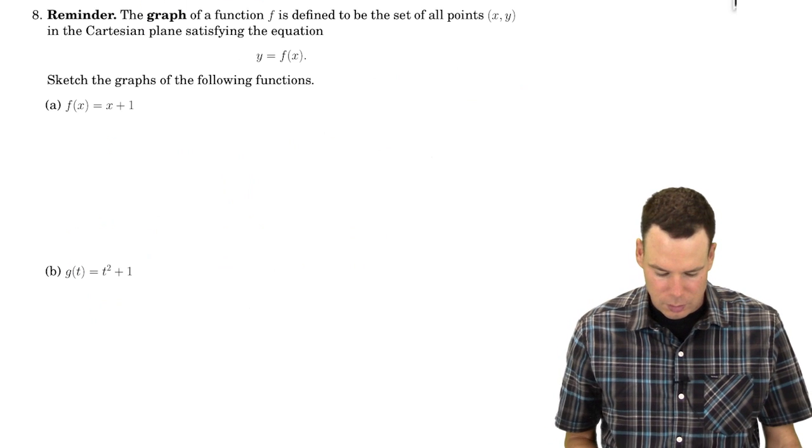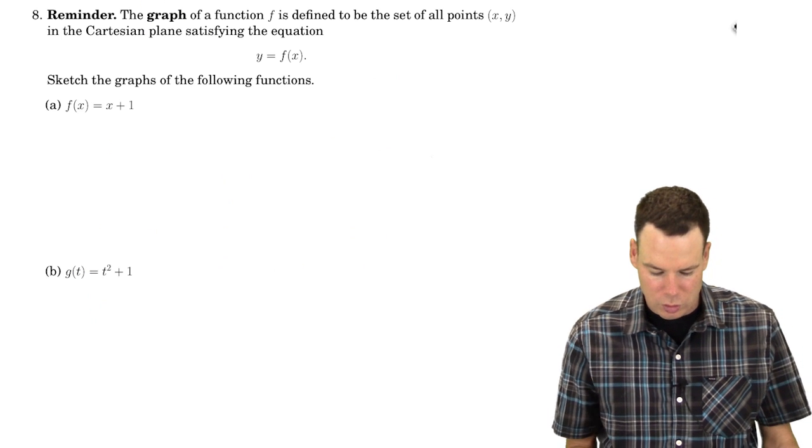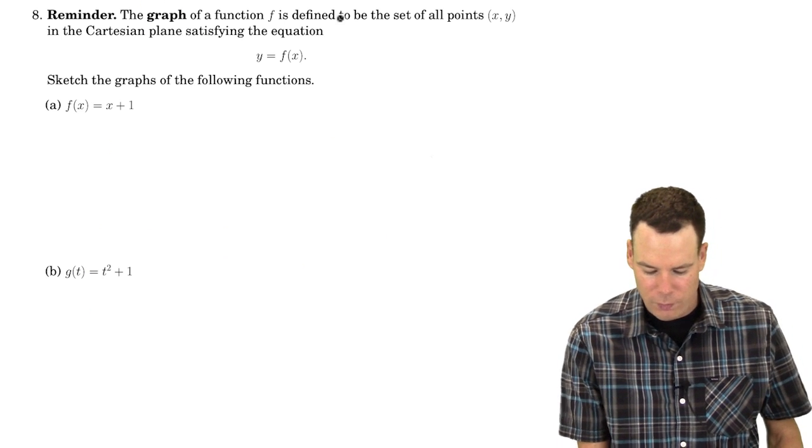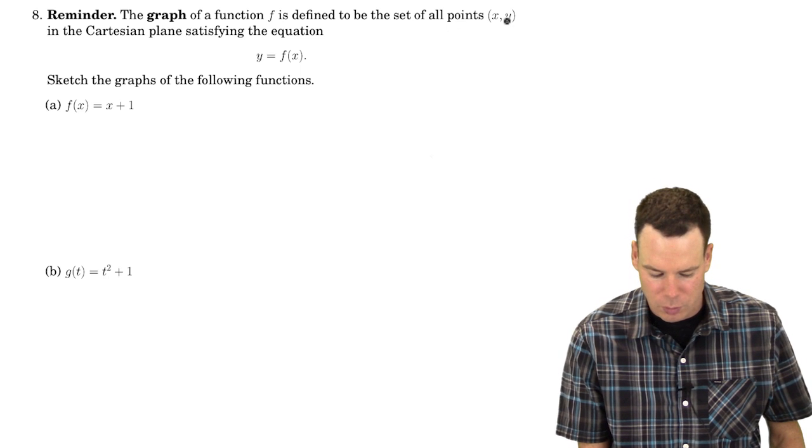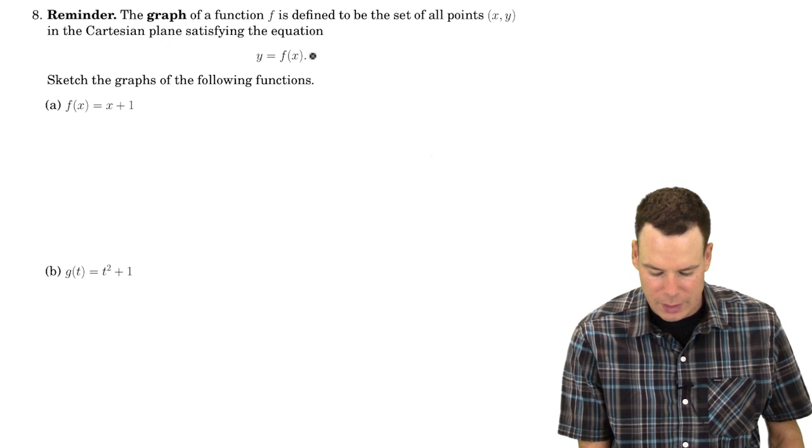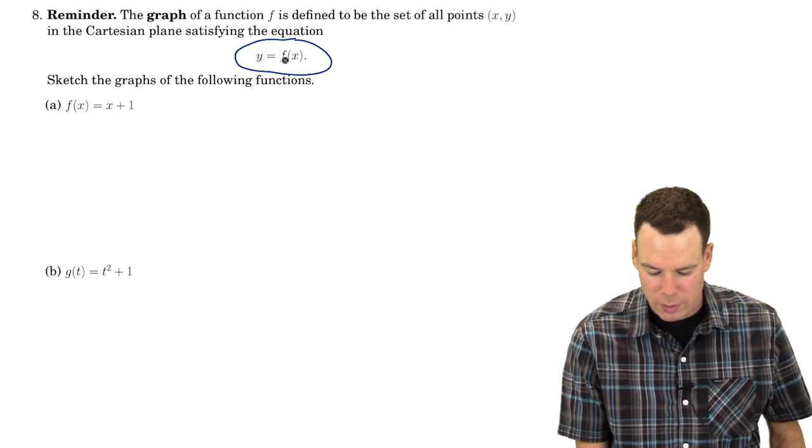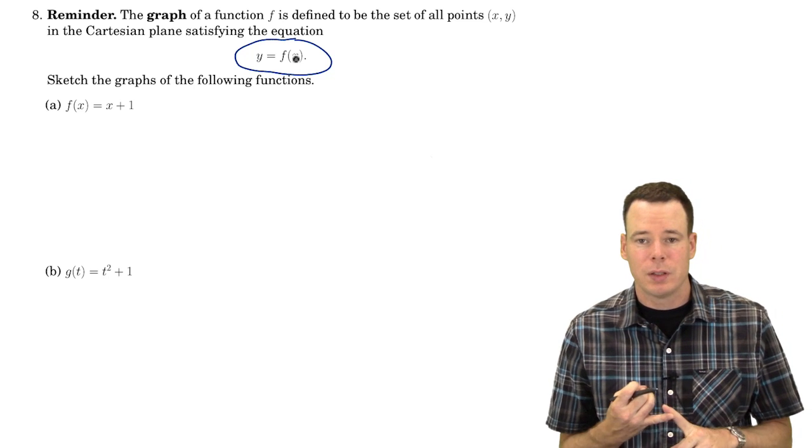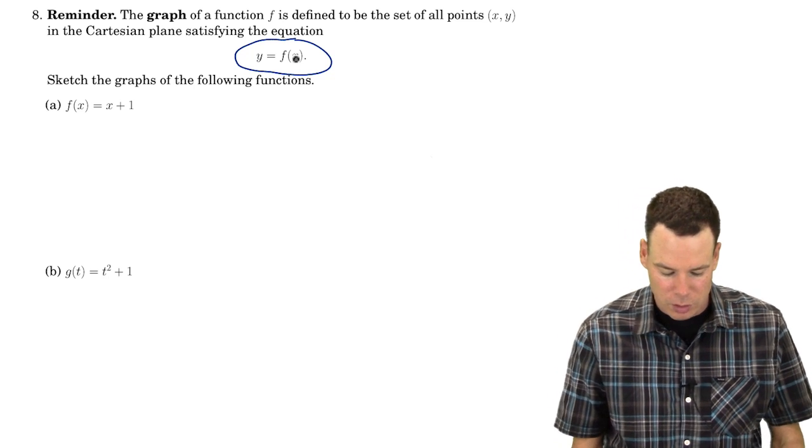Right now let's look at graphing some familiar functions. The graph of a function is defined to be the set of all points (x, y) in the Cartesian plane that satisfy the equation. So that's the definition of the graph. I've got y equals f(x), it's just the set of all points (x, y) which satisfy that equation.